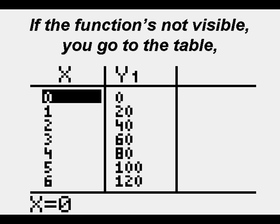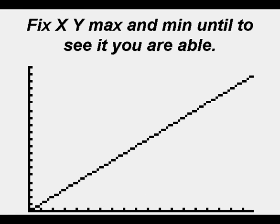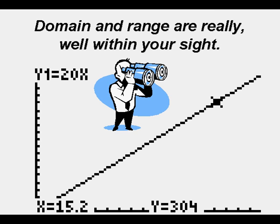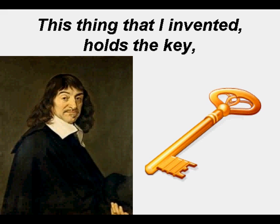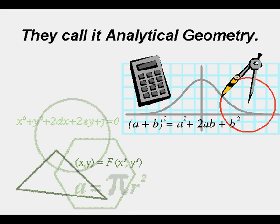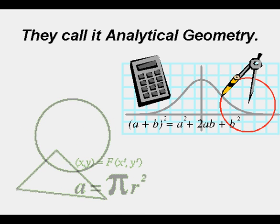If the function is not visible, you go to the table. Fix X, Y, max and window until you can see if you are able. You can use the trace key to move left and right — domain and range are really well within your sight. This thing that I invented holds the key; they call it analytical geometry.